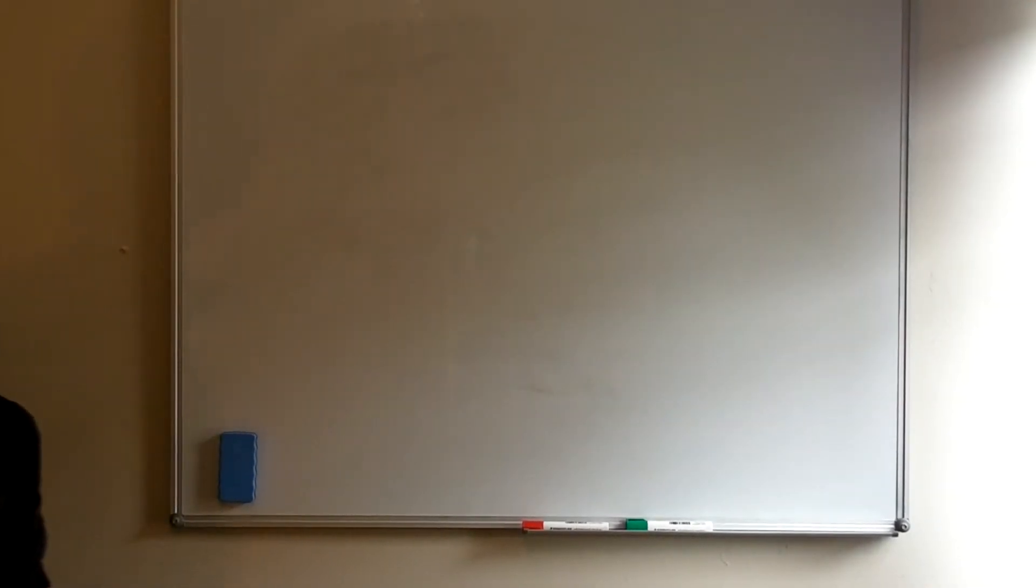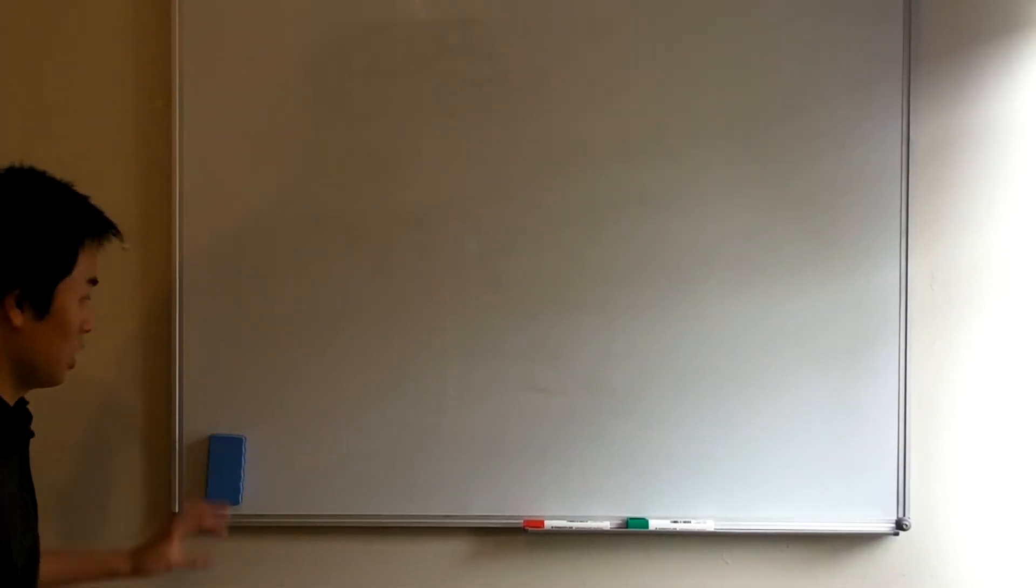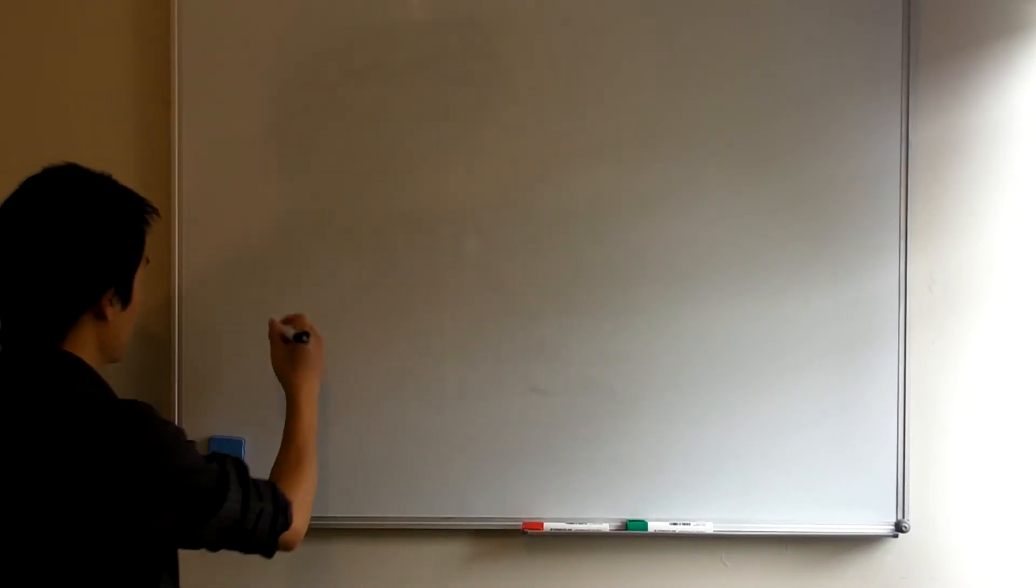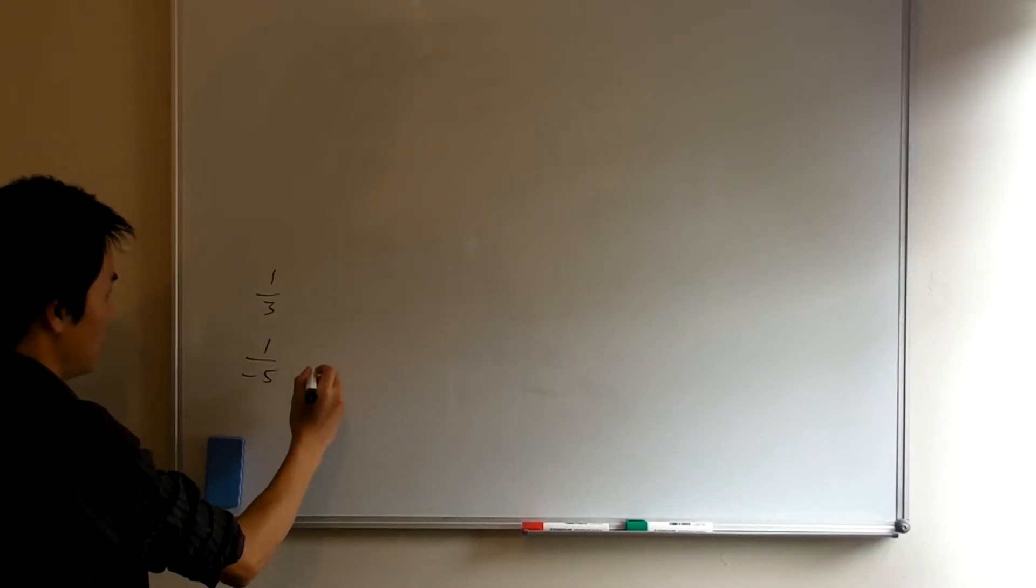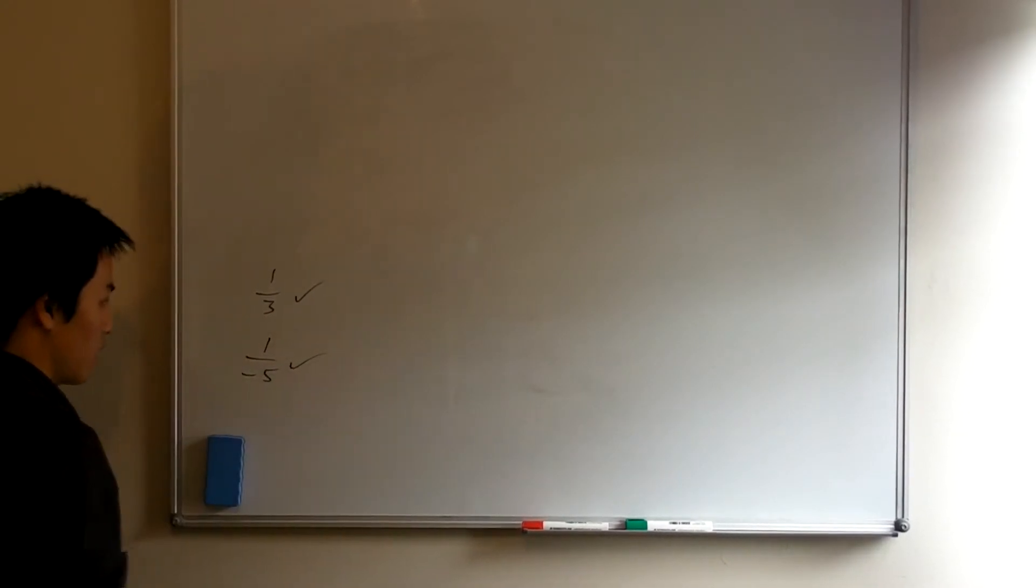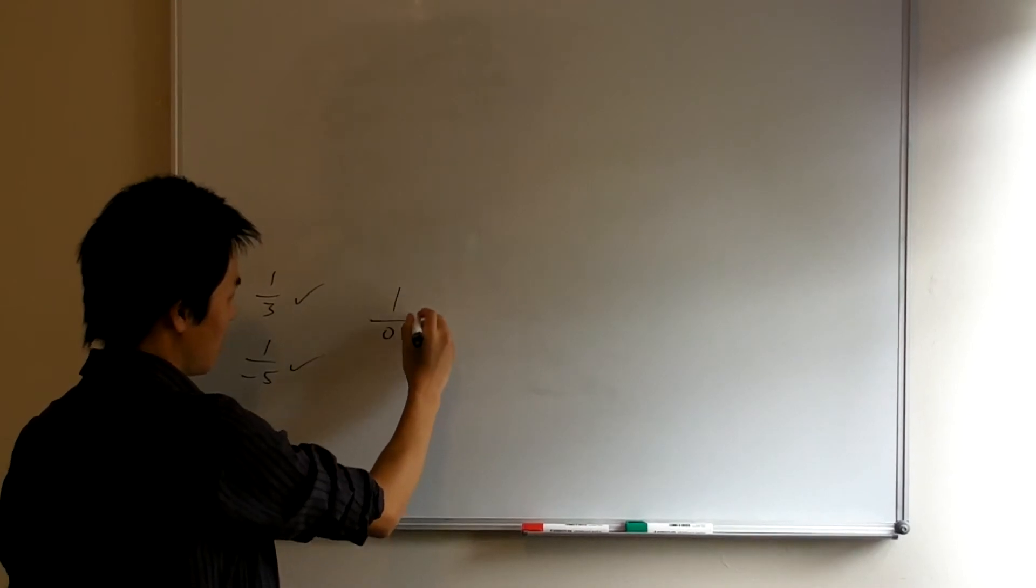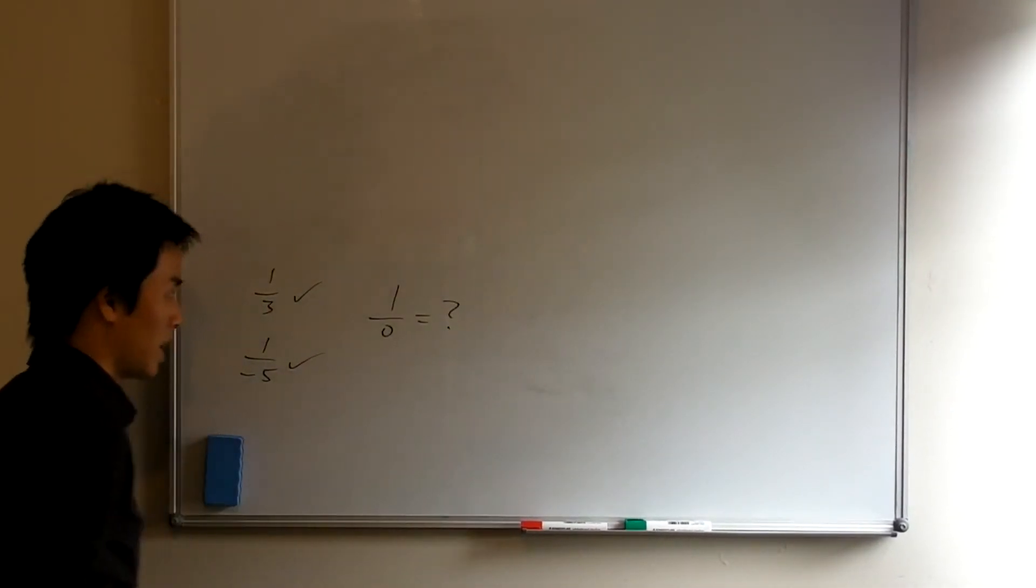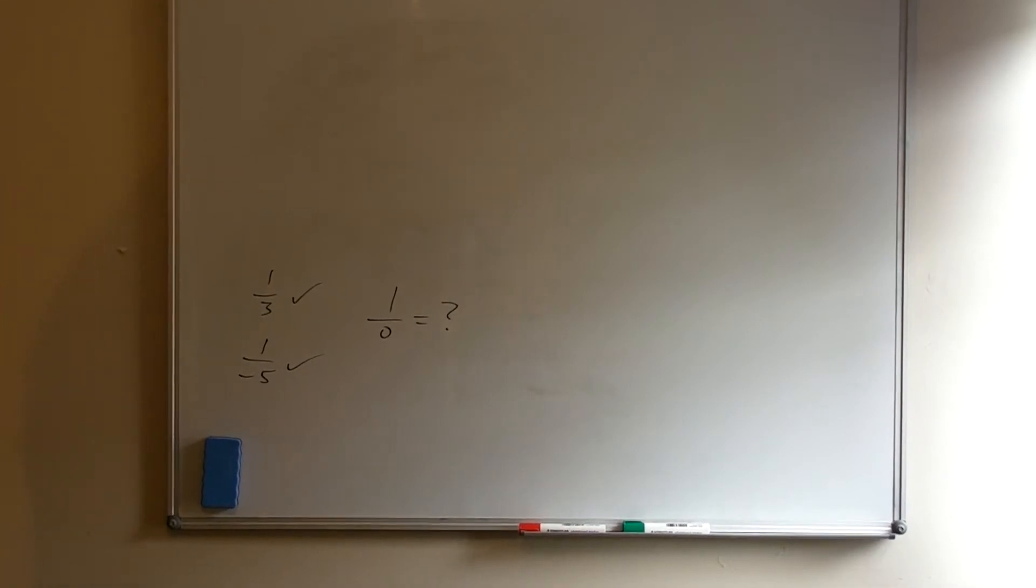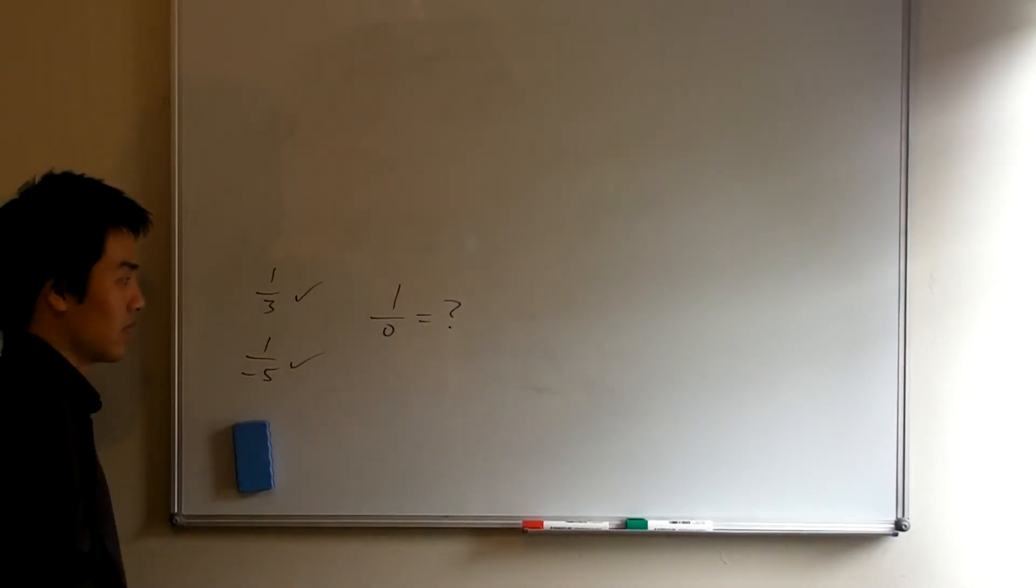On to our next problem. Why is it that we can't divide by zero? So you've been playing around with fractions for a while. Well, you can divide by positive numbers, you can divide by negative numbers, everything checks out, everything's fine. However, you can begin to consider this thing, 1 divided by zero. And what should this thing be?